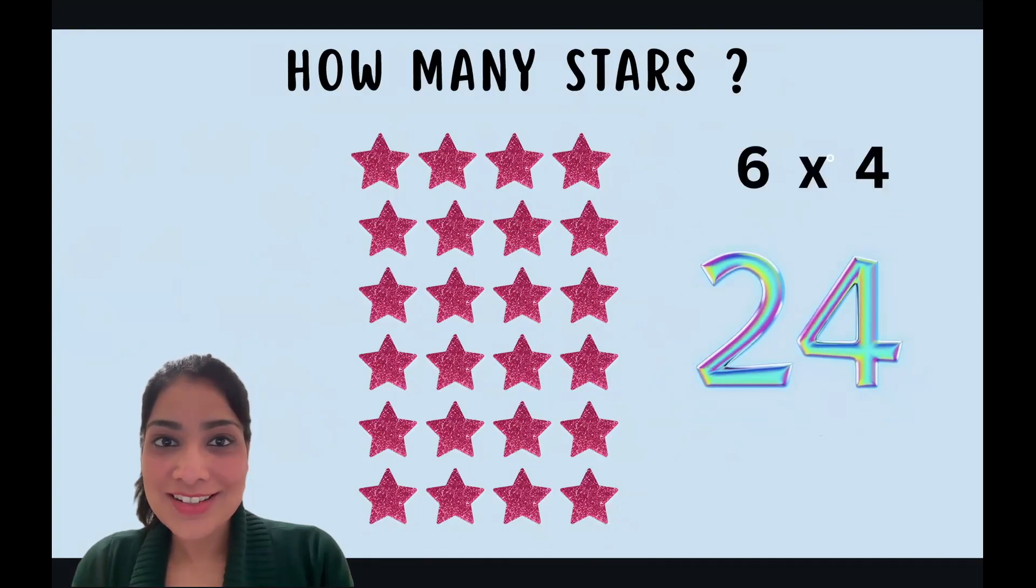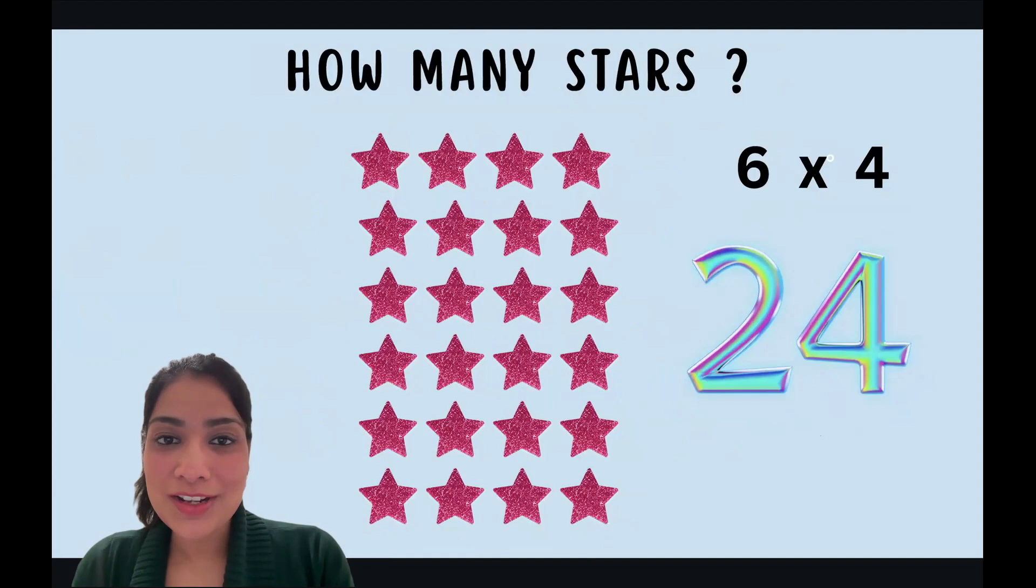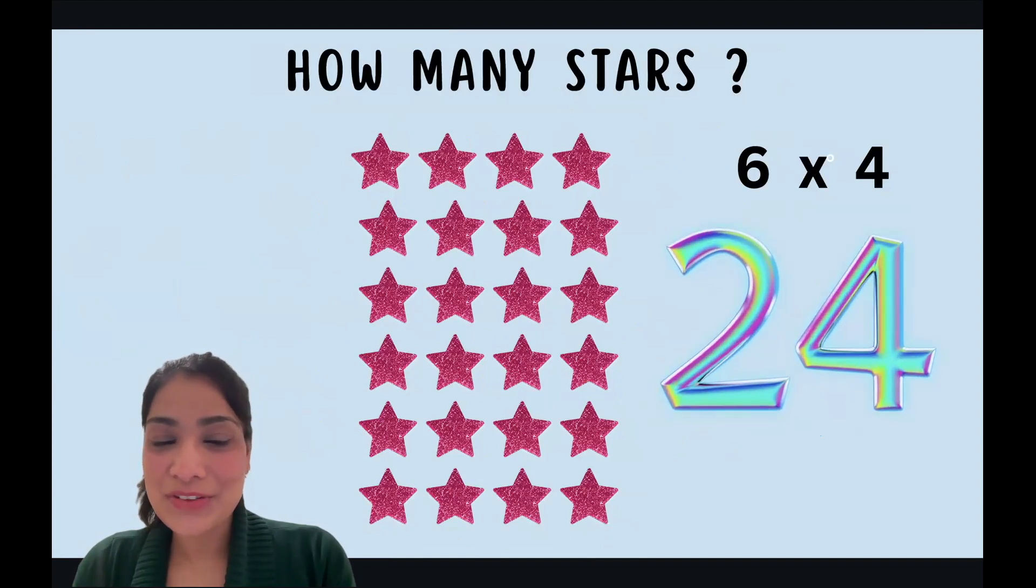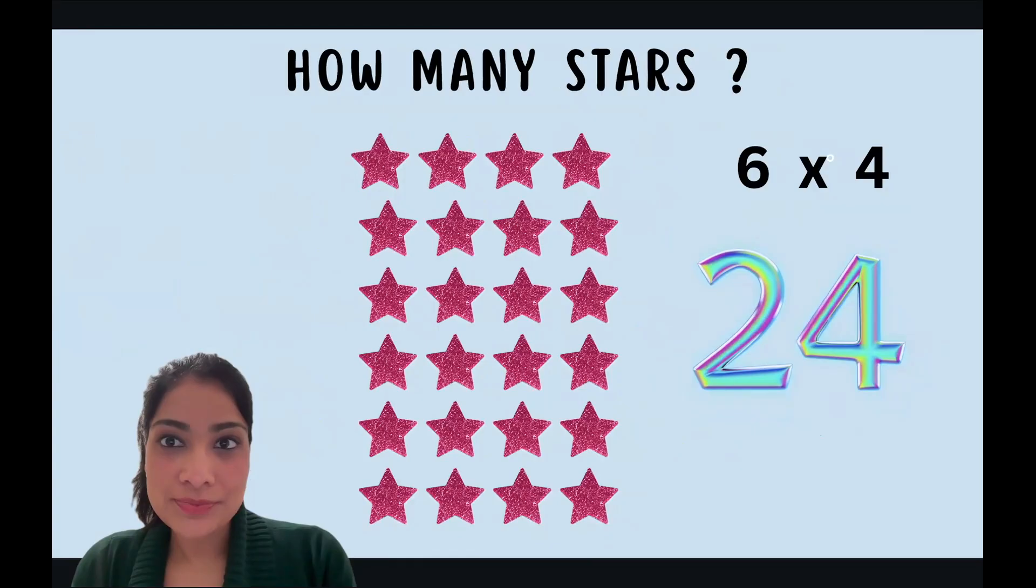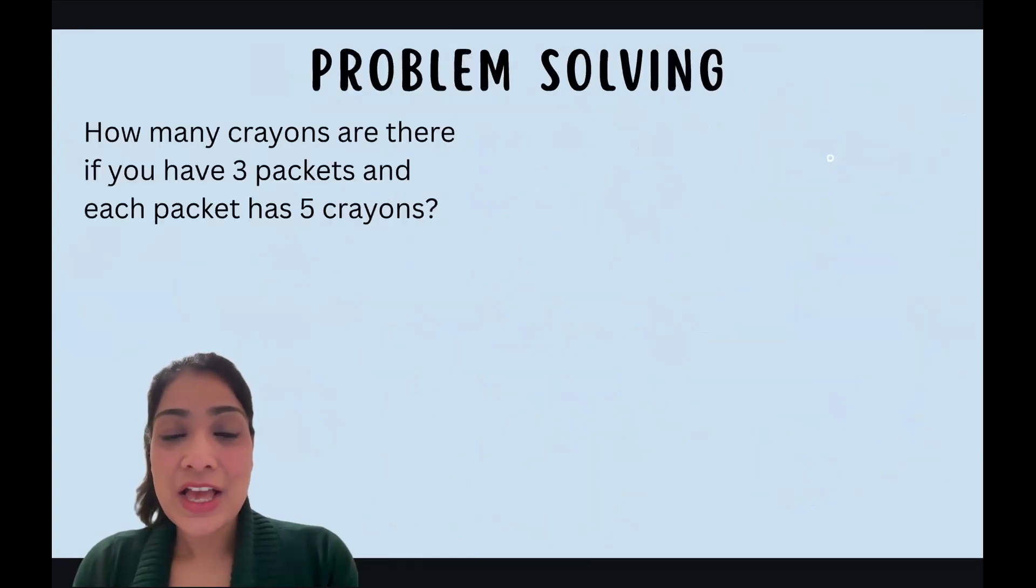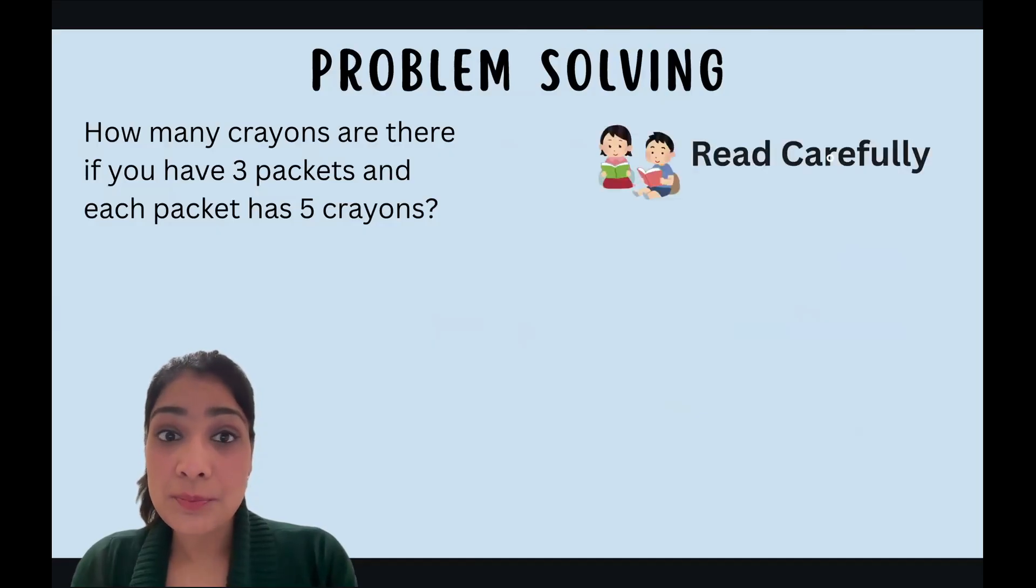Let's do one more. Twenty-four stars. It's six rows and four columns, six times four is twenty-four. Okay, we'll do our problem solving. Let's try that.